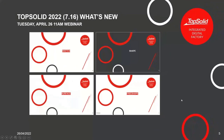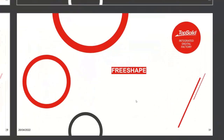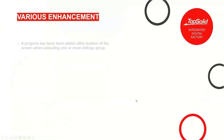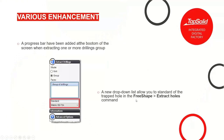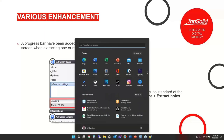The last thing in this webinar has to do with free shape — just a couple of small improvements. First, a progress bar has been added at the bottom of the screen so when you're extracting a bunch of drillings into a group, you have an idea of how long it will take. The other improvement is a new drop-down list allowing you to choose the standard for tapped holes.